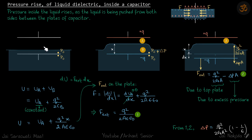Now it's time to find the value of that excess pressure. Initially the capacitor has no charge, and the pressure just above and below the bottom plate is p0. Then we charge the capacitor to plus q and minus q. As discussed, the liquid is pushed from both sides, so the liquid level rises between the plates, developing an excess pressure at the bottom. We call that pressure p0 plus delta_p, and we need to find the value of delta_p.